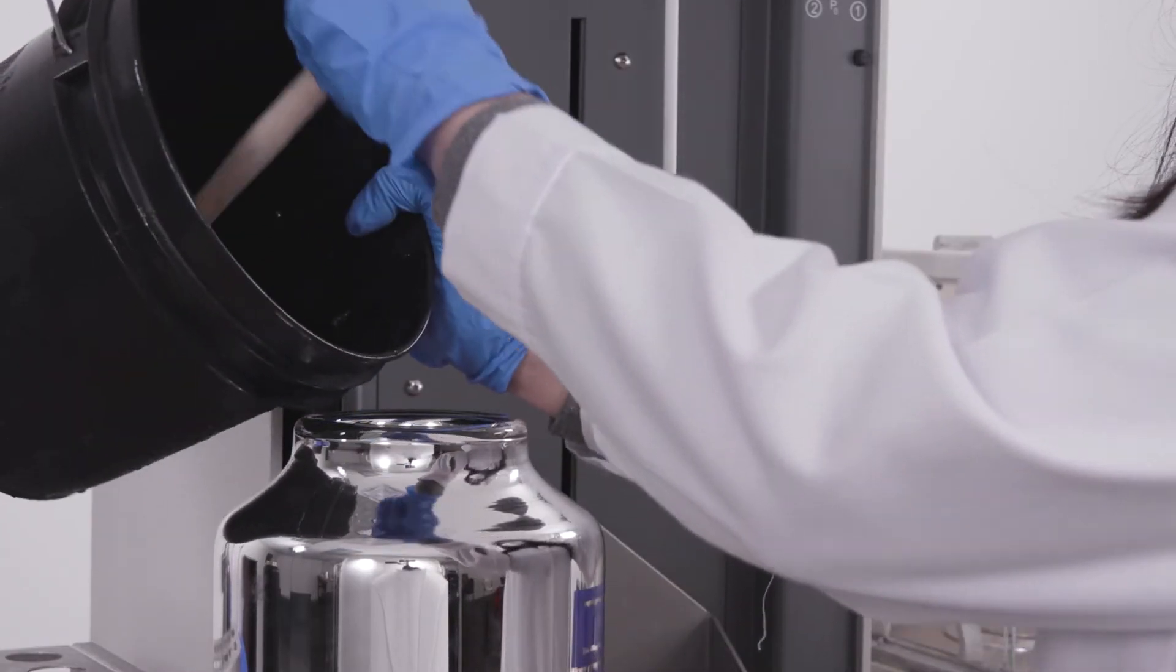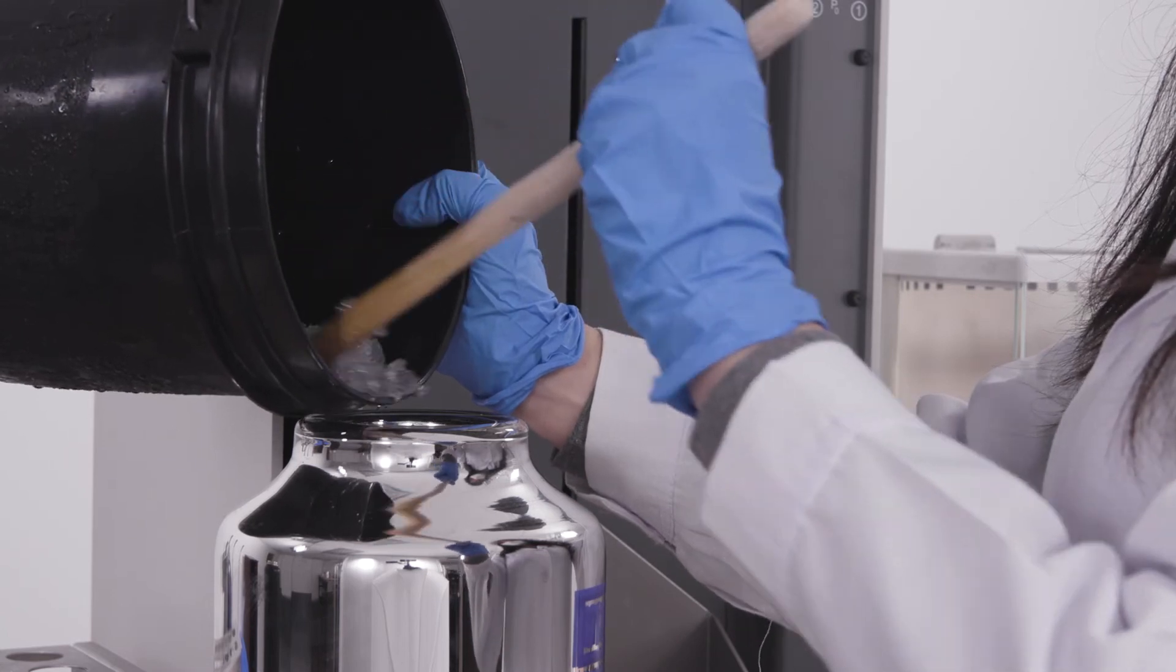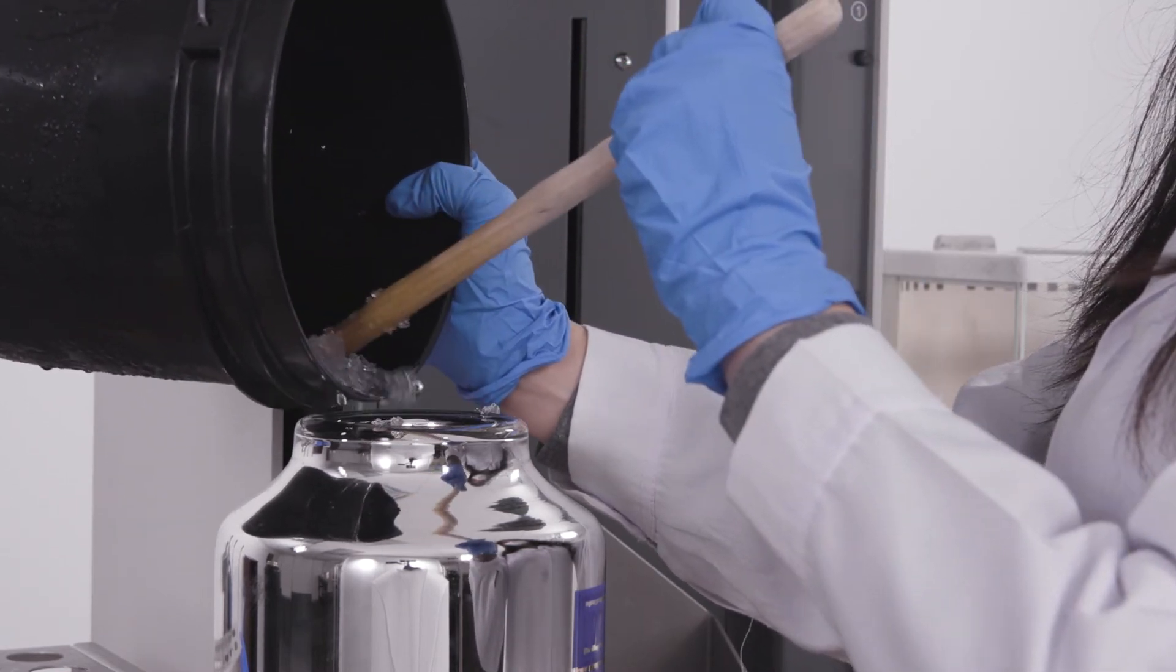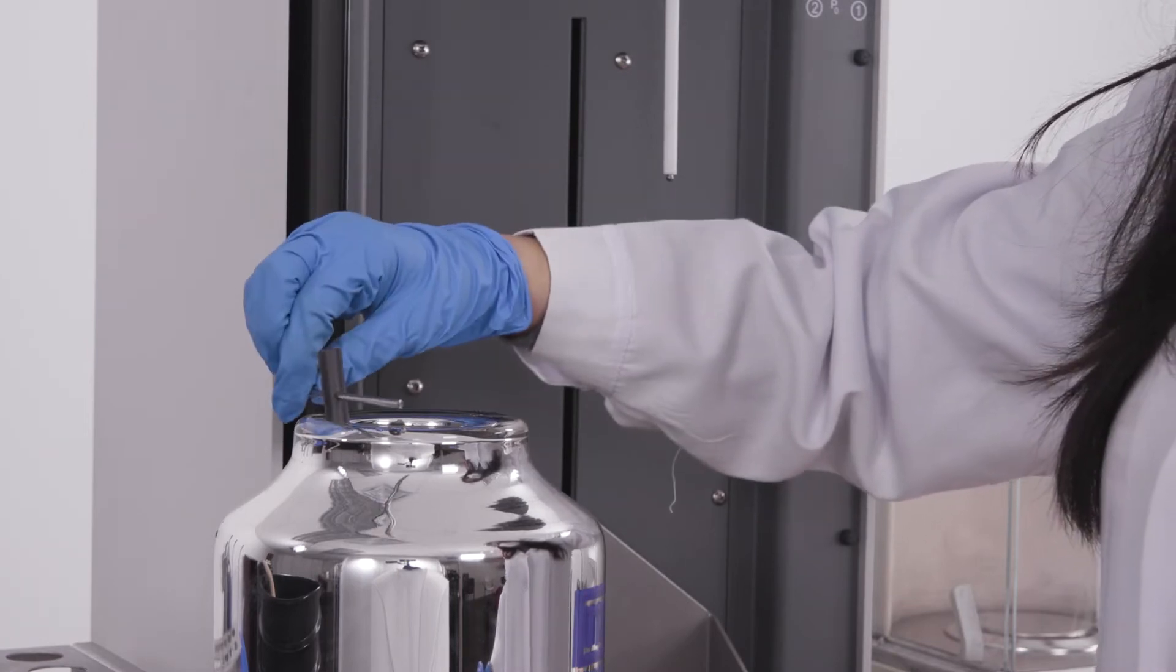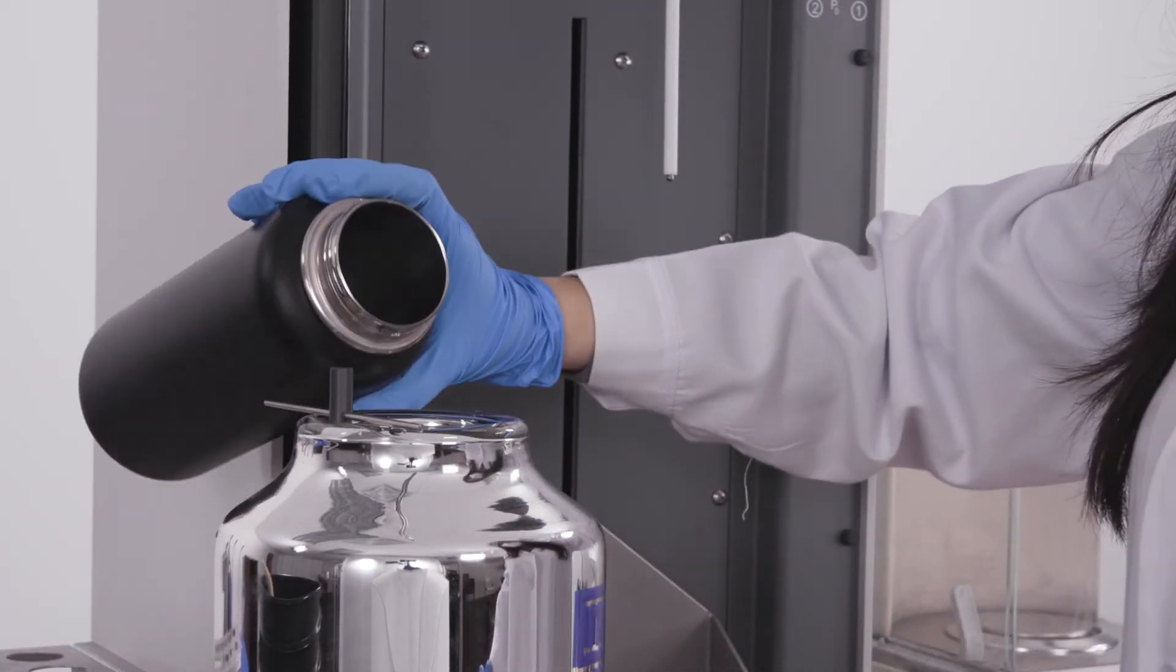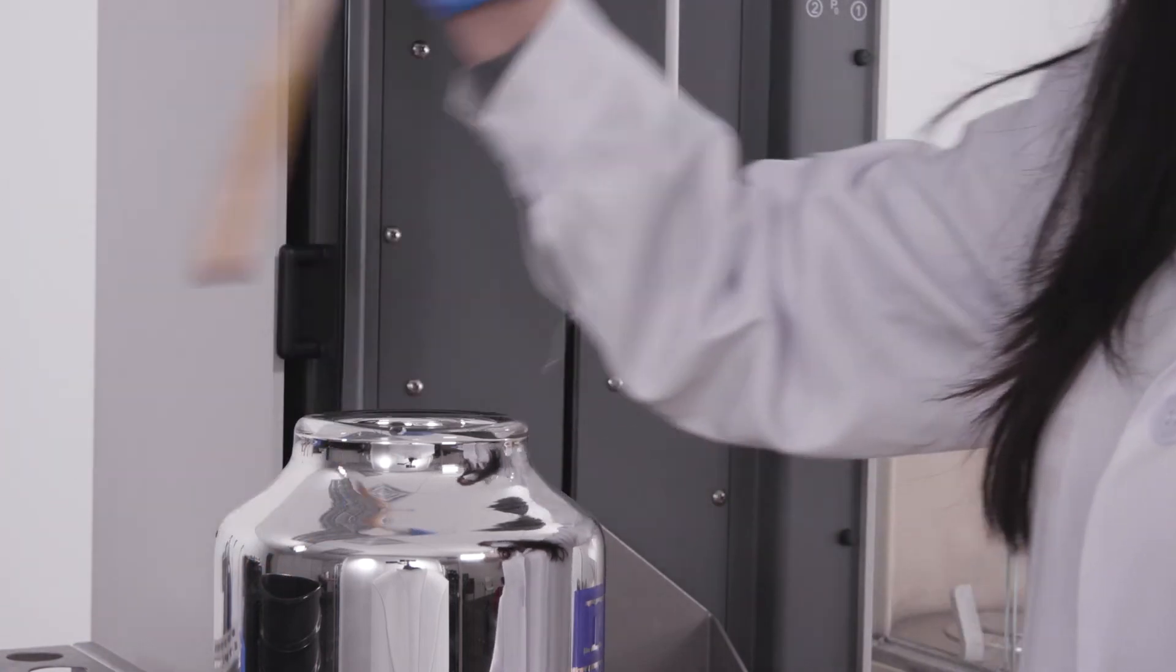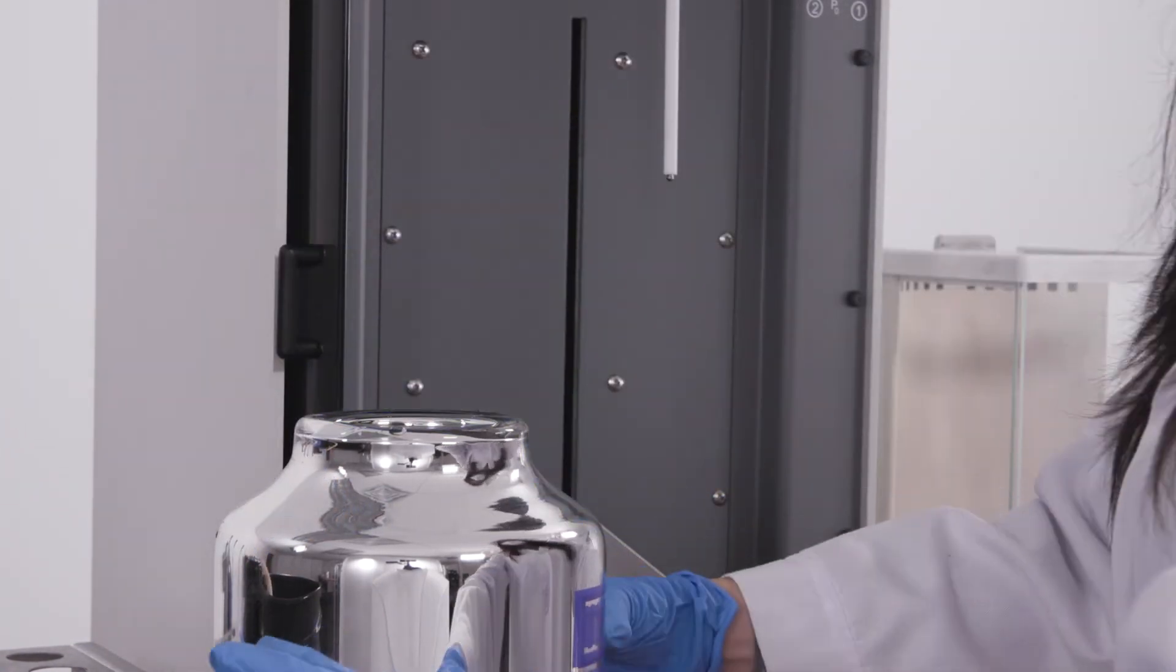Fill the dewar halfway with crushed ice. Add water until it gets to the dipstick indicator. Ice should still be present. Use a wooden stick to ensure the ice does not compact as the sample tube is submerged in the dewar during analysis.